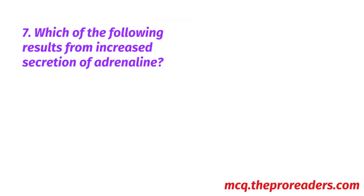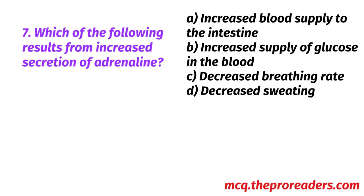Which of the following results from increased secretion of adrenaline? A. Increased blood supply to the intestine. B. Increased supply of glucose in the blood. C. Decreased breathing rate. D. Decreased sweating. Option B, increased supply of glucose in the blood, is the correct answer.